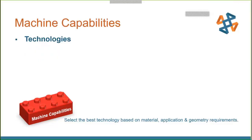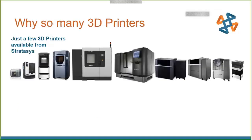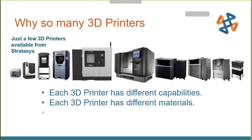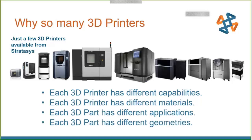The first thing we want to look at is the technologies. There are literally thousands of 3D printers available today. The big question always comes up: why are there so many? Each 3D printer has different capabilities, different materials, and each part has different applications and geometries. This is why you have to look at the printer first as you consider your application and geometry.